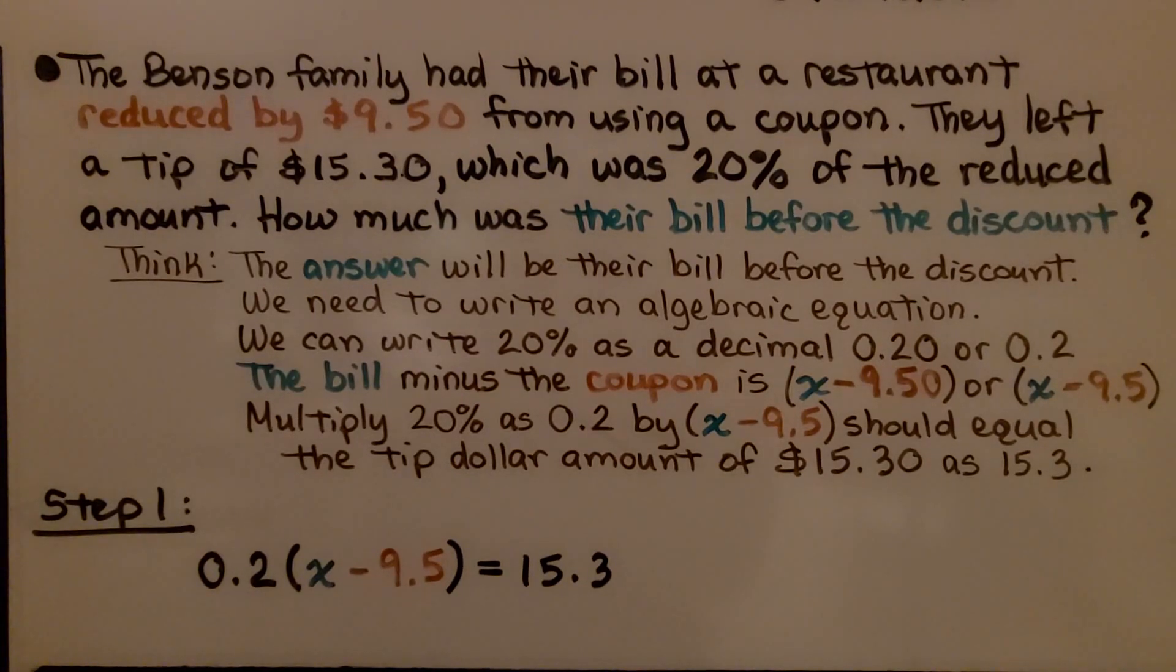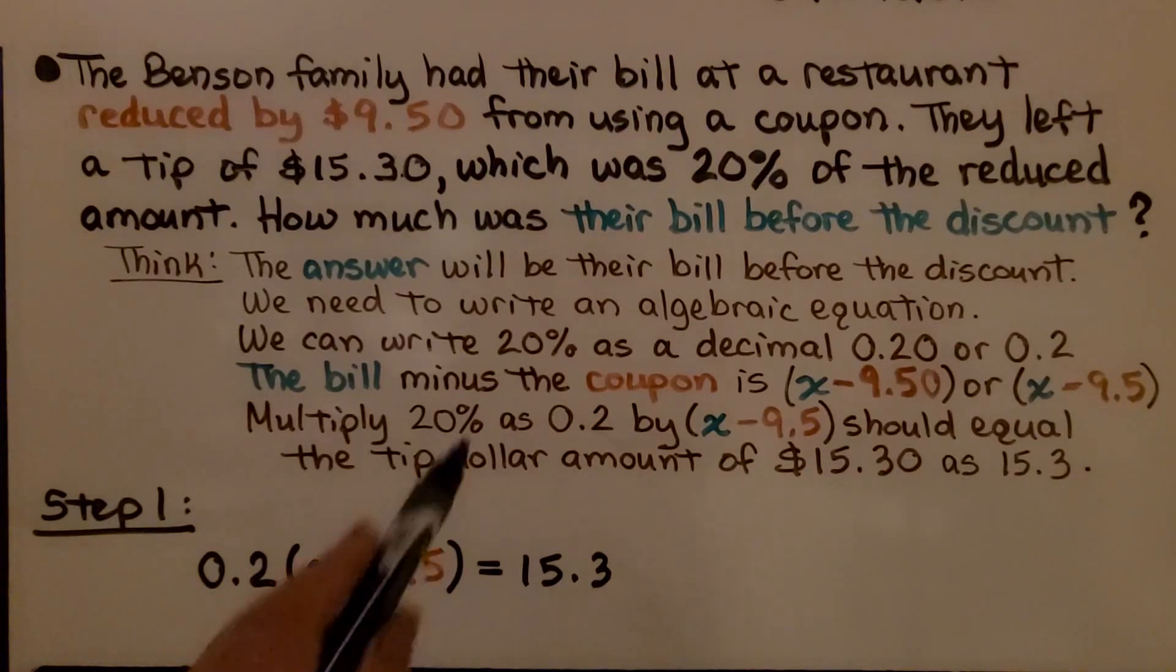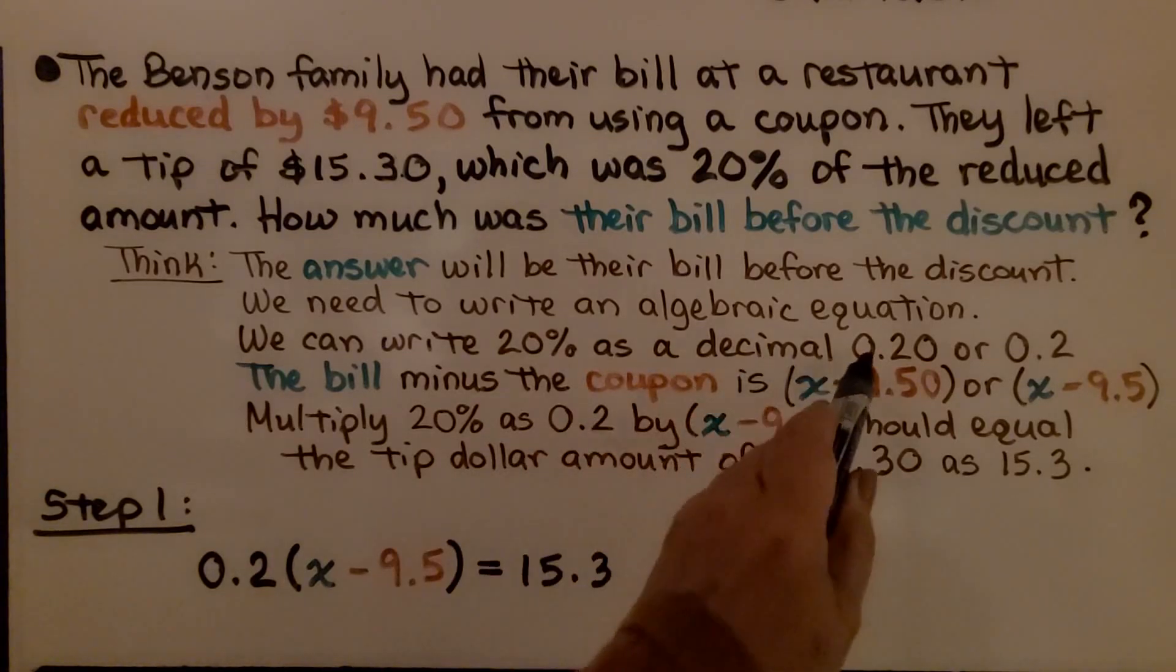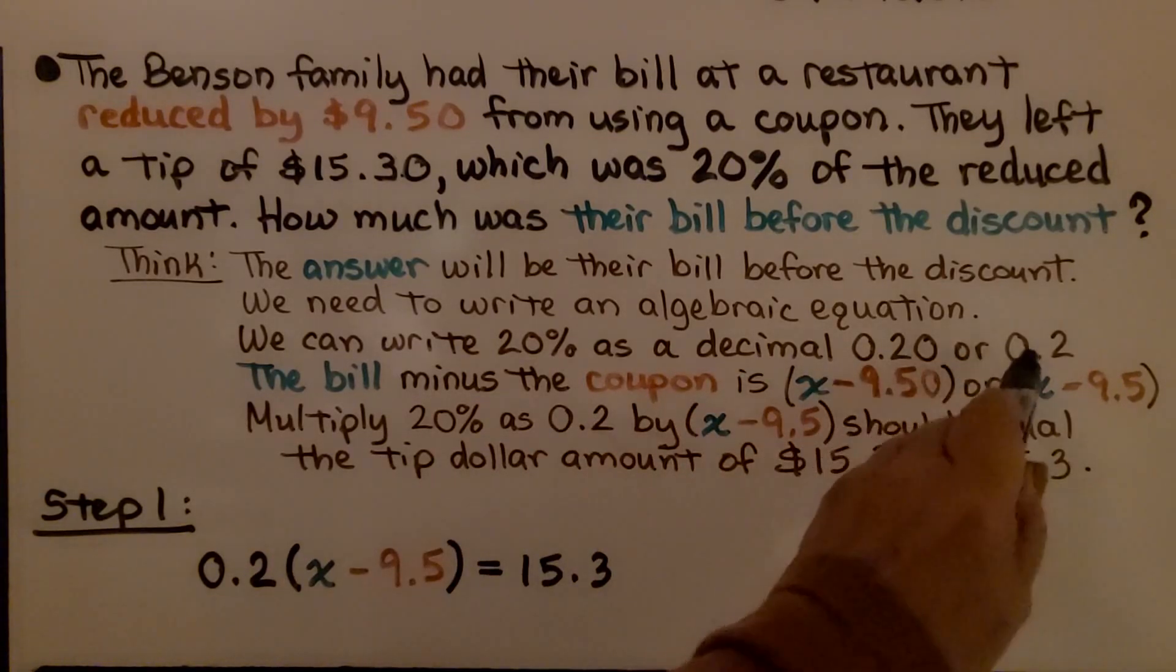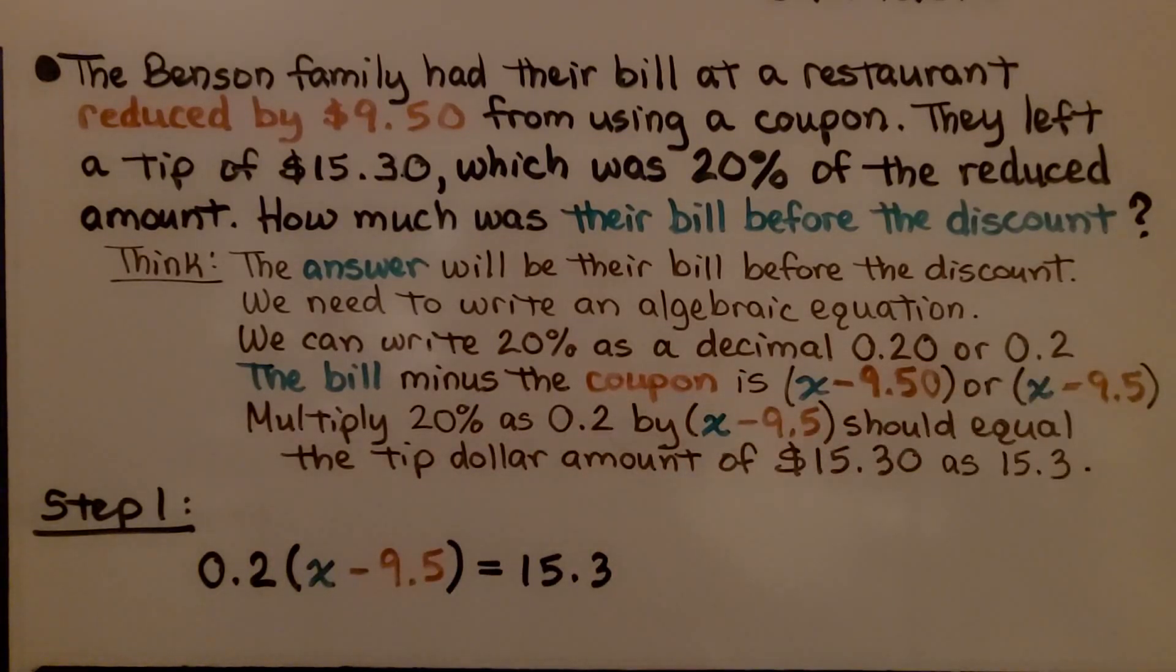The Benson family had their bill at a restaurant reduced by $9.50 from using a coupon. They left a tip of $15.30, which was 20% of the reduced amount. How much was their bill before the discount? So we think the answer will be their bill before the discount. We need to write an algebraic equation and we can write 20% as a decimal 0.20 or 0.2.